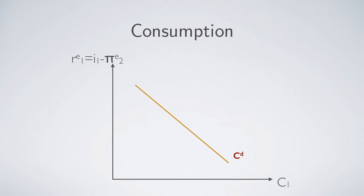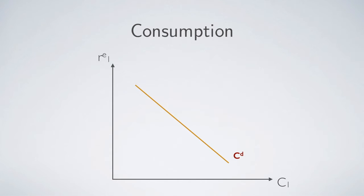In the past, we did not talk about price changes, so our inflation rate was always zero. That is why we assumed that consumption is negatively related to the nominal interest rate — because when the inflation rate is zero, real and nominal rates are the same. But in practice, to be more rigorous, it should be the expected real interest rate that governs consumption behavior.